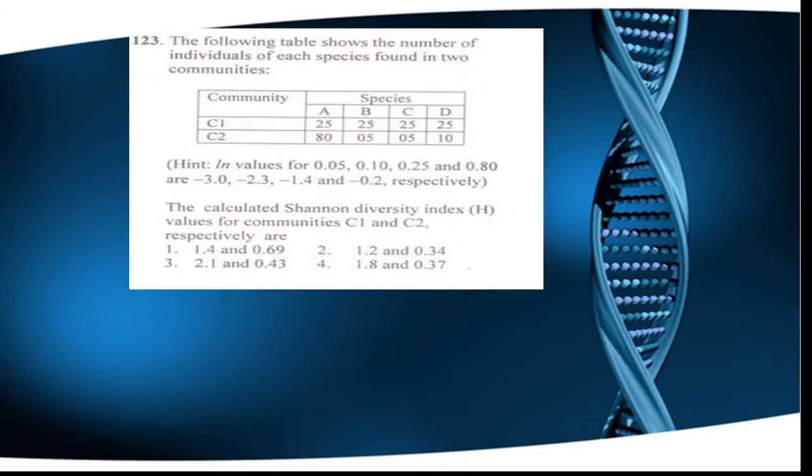Let's look at one of the CSI questions. The question shows a table with the number of individuals of each species found in two communities C1 and C2. As we discussed, the Shannon Diversity Index considers both species richness as well as evenness.